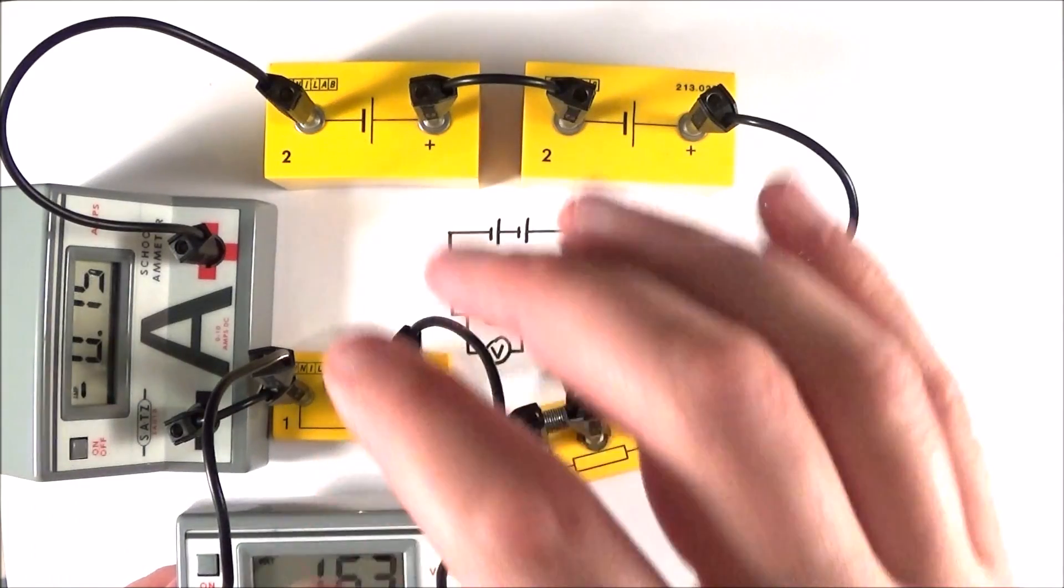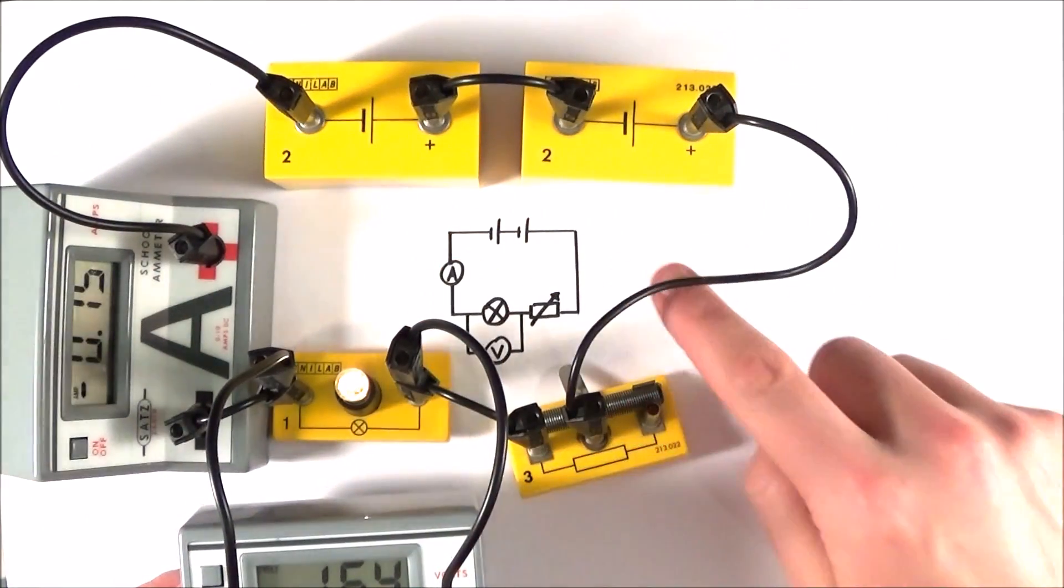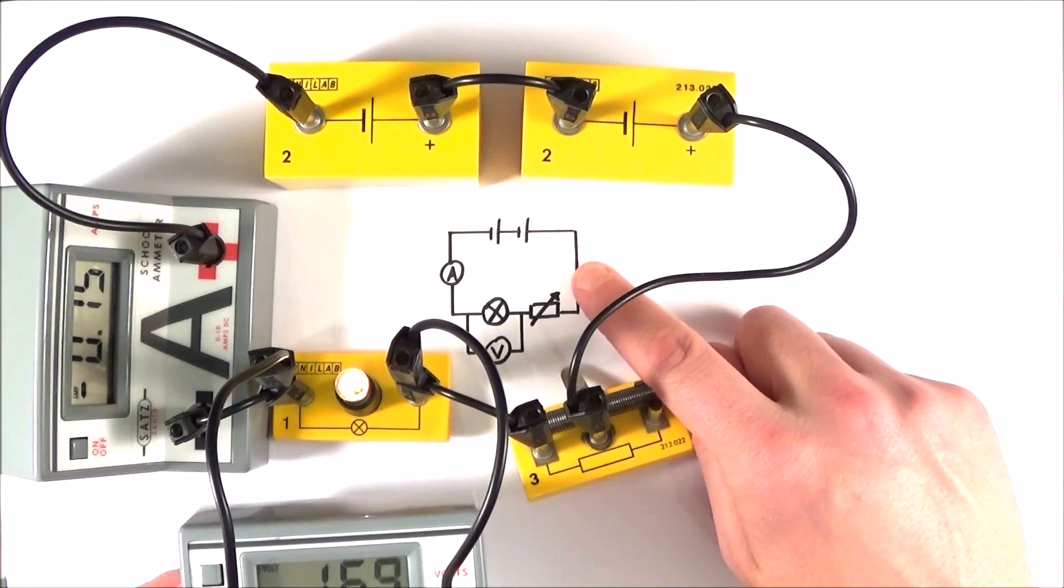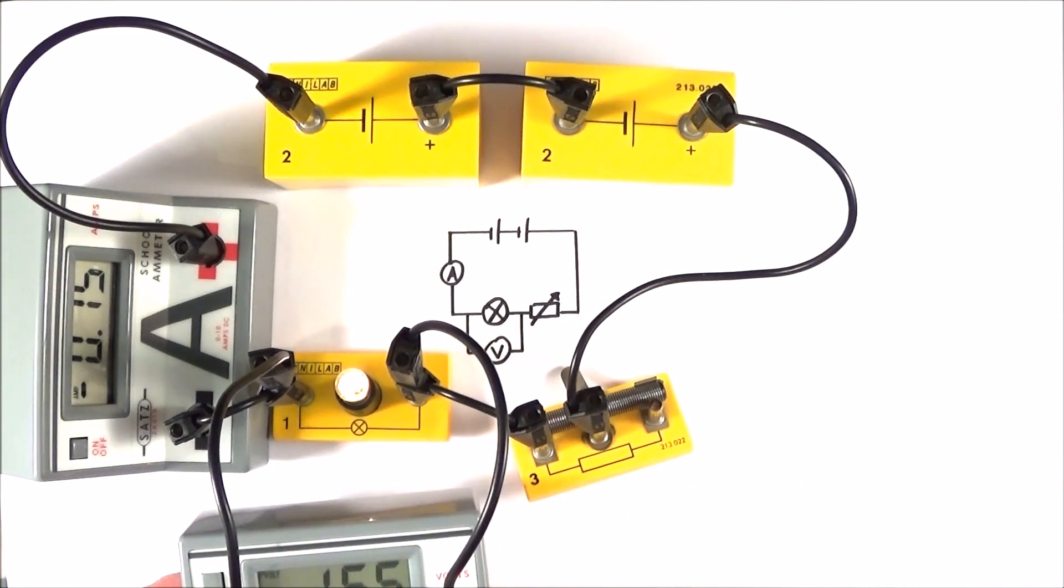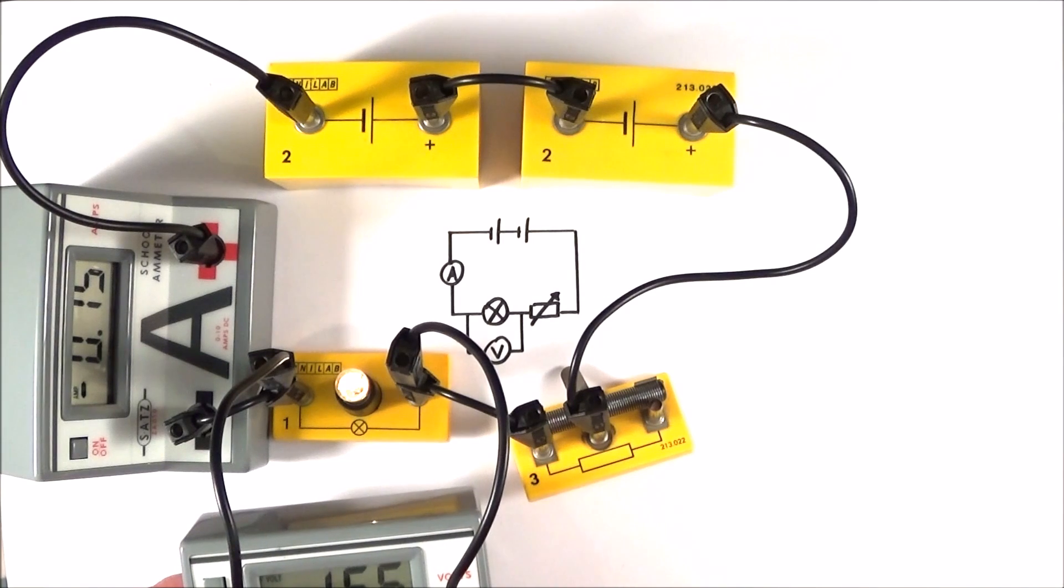And this jumble of wires and various components is exactly what we see on this circuit diagram down here. Now, the important thing to remember is I'm adding one component at a time and checking my circuit works.